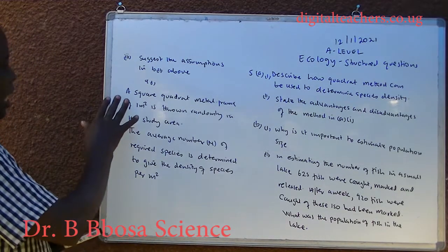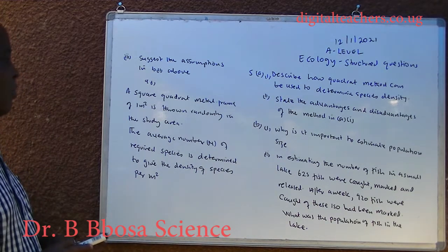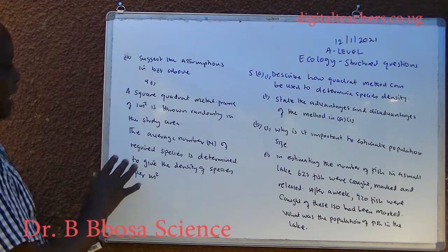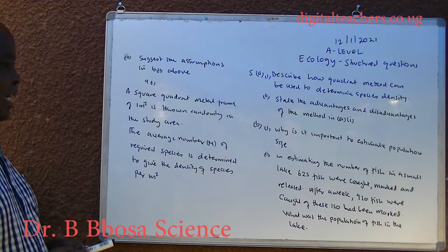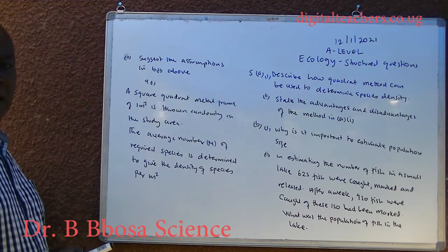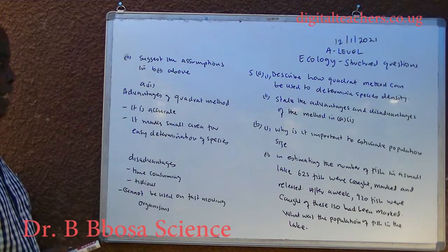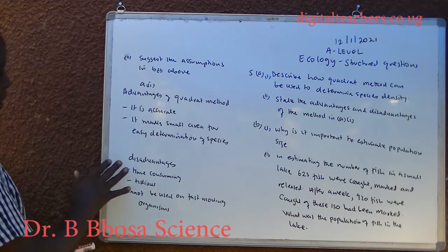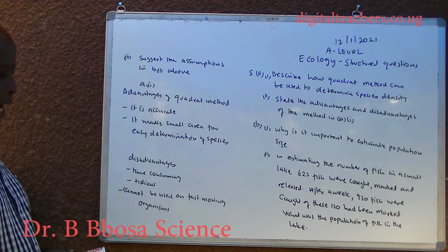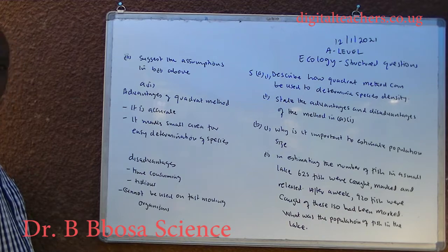Part one A. A square quadrat metal frame of one meter squared is thrown randomly in the study area. The average number N of the required species is determined to give the density of species per meter squared. Advantages of quadrat method: it is accurate, it marks a small area for easy determination of species. Disadvantages: it is time consuming, it is tedious, cannot be used on fast moving organisms.